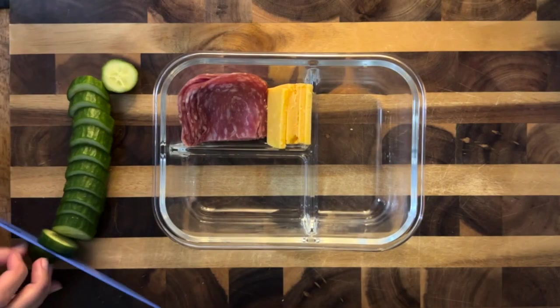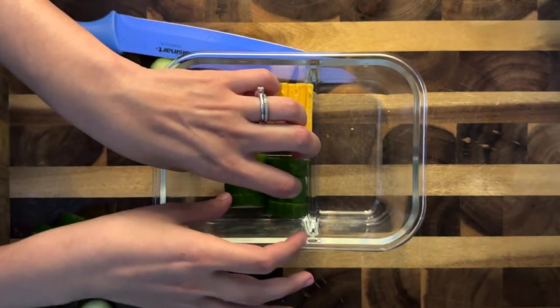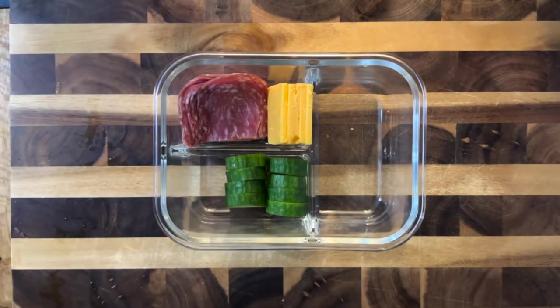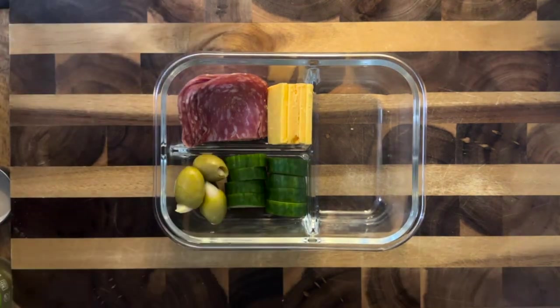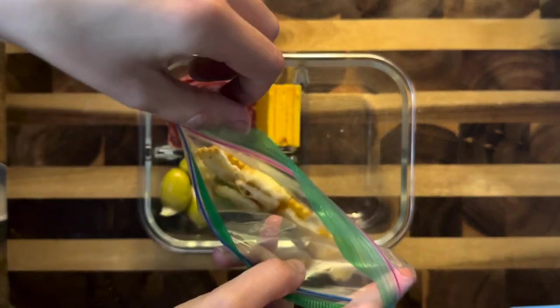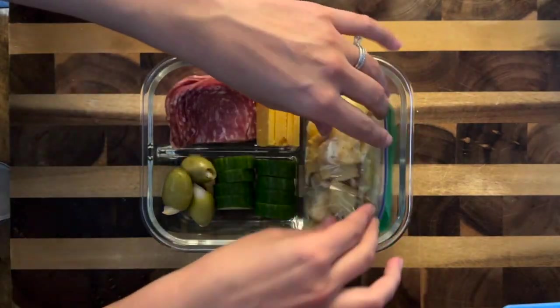I cut up this small cucumber and added those in there as well, in addition to my favorite olives, which are these garlic-stuffed olives. And then lastly, I added in a couple crackers. I like to put them in a plastic bag so they don't get soggy, and that was his lunch for today.